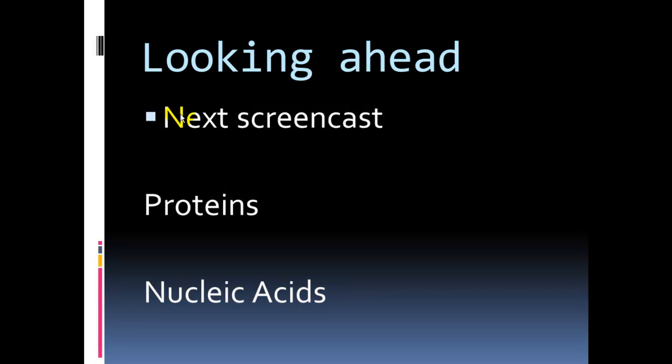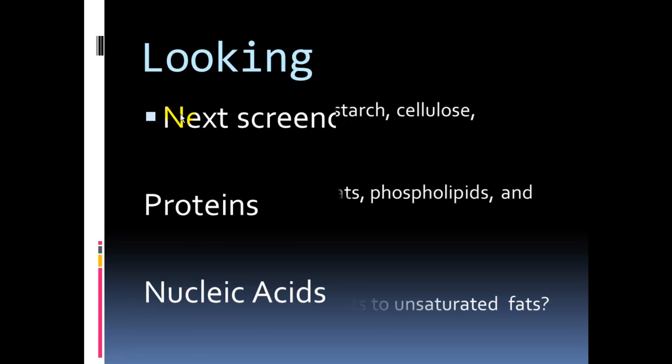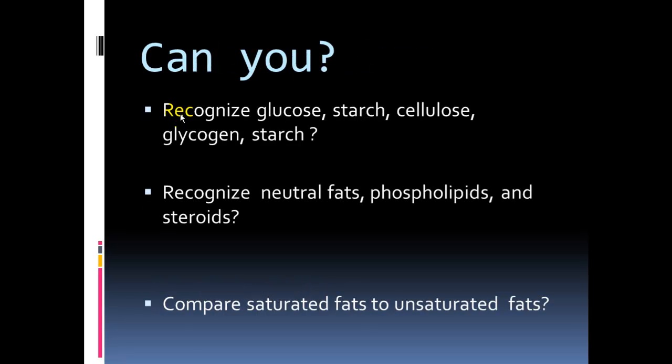So, next screencast, we're going to talk about proteins, nucleic acids, and hopefully, from this screencast, you can identify glucose. Remember that skeleton, starch, cellulose, glycogen are polysaccharides. We don't need to look at starch twice. Just once will do. And can we recognize our neutral fats, phospholipids, steroids, and compare something that we do throughout this course, saturated fats to unsaturated fats.